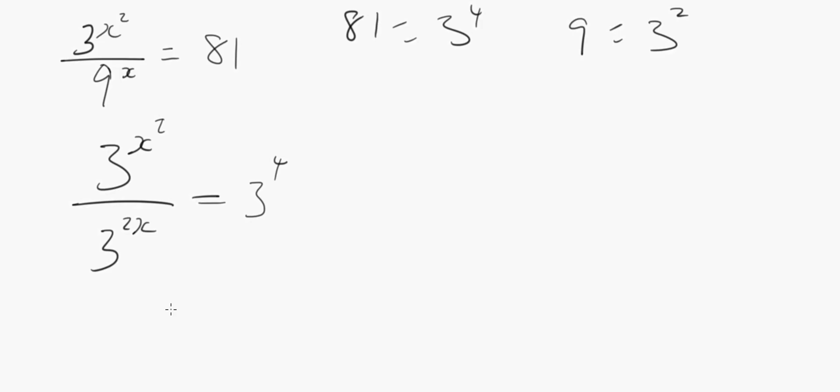for this kind of problem will be, remember the law of indices: when the base is the same at the left - let's just begin at the left - we are going to subtract the power. So this is going to give us 3 to the power x squared, okay, minus 2x.